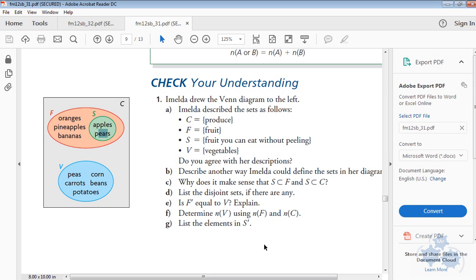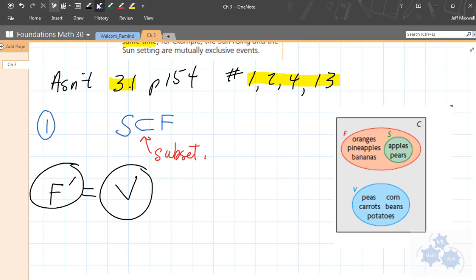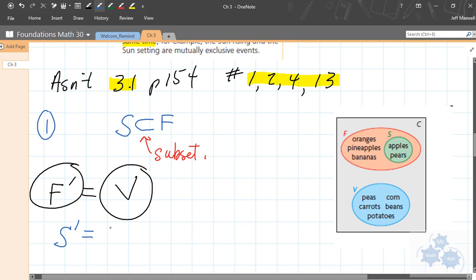And finally, list the elements in S prime. So S prime, or the complement of S. The complement of S would be everything that's not inside this circle. And when it says list, you actually have to write the names of the items. If it says the number of, you just have to count them. So if we're listing S prime, you should have it written kind of like this. Remember, equal sign, and then the braces. So those are called braces. And you would list all of them that are not in S. So all of these right here, and these right here. Oranges, pineapples, bananas, etc. Peas, carrots, potatoes, beans, and corn. And brace. Any questions about number one?